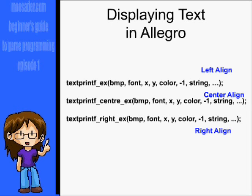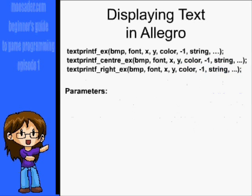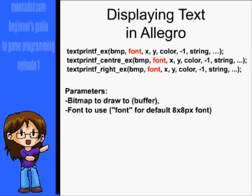Each of these are aligned a little differently, with center being in the center and then obviously the others are left and right aligned. The parameters for each of these are the same. The bitmap you're rendering to, which should be the buffer. The font you're using, which for now can just remain font, which is the default 8x8 font.